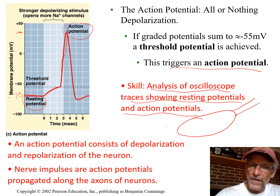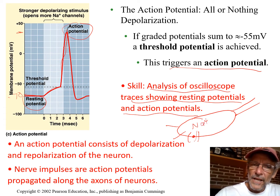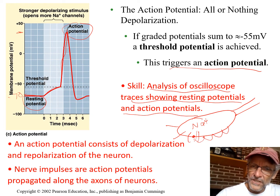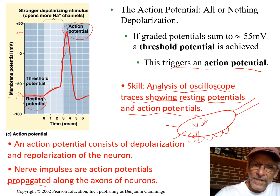Whether that's the cell body, dendrite, or axon — if even one area gets to negative 55 and has a whole bunch of sodium gates open, a whole bunch of sodiums come in and flip the polarity. That's going to trigger it to happen in the next place, and the next place, and the next. That's what propagate means.